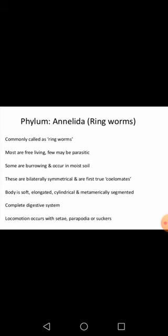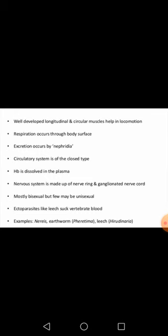Locomotion occurs with the help of setae — these are fine hair-like structures, also called parapodia. Sometimes they also have suckers which help them attach to objects. They have well-developed longitudinal as well as circular muscles. In the previous case of Aschelminthes there were only longitudinal muscles, but in Annelida both longitudinal and circular muscles are present.